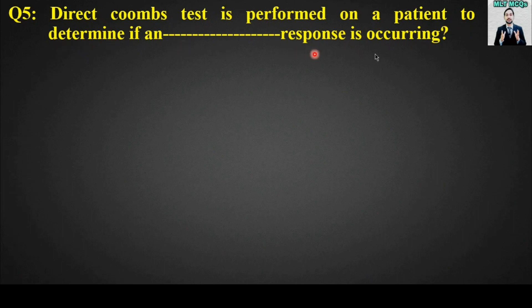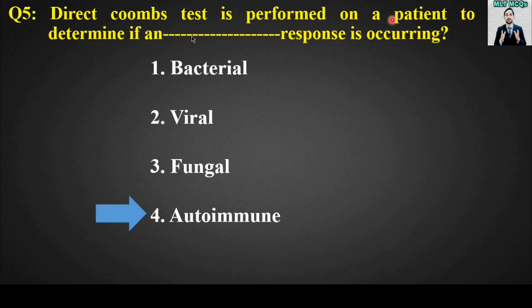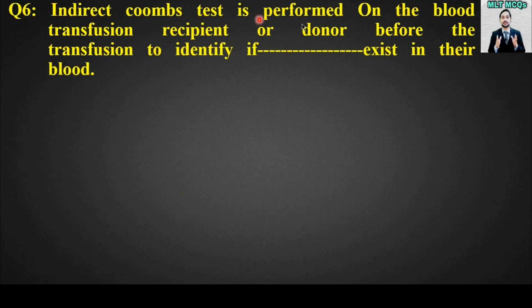MCQ number five: The direct Coombs test is performed on a patient to determine if an blank response is occurring. Options: bacterial, viral, fungal, or autoimmune. The right answer is option number four — autoimmune. The direct Coombs test is performed on a patient to determine if an autoimmune response is occurring.